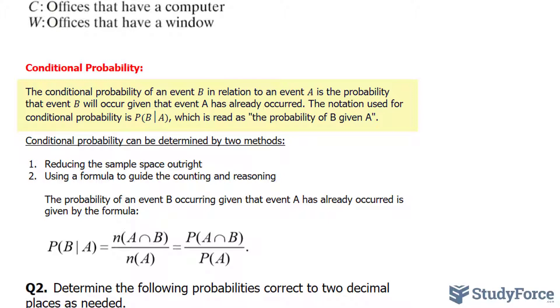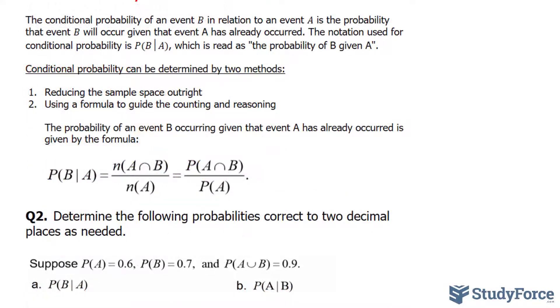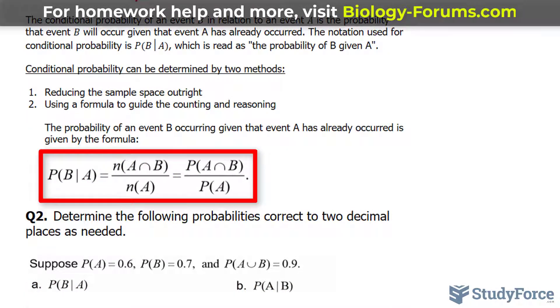The notation used for conditional probability is read as 'the probability of B given A.' The method for finding the conditional probability requires using a formula which is shown underneath.